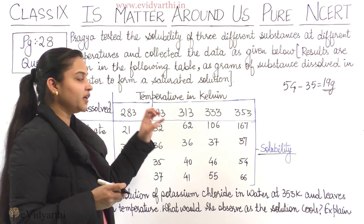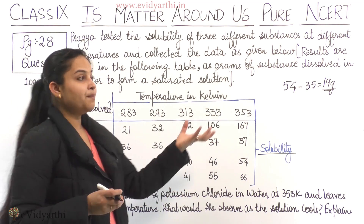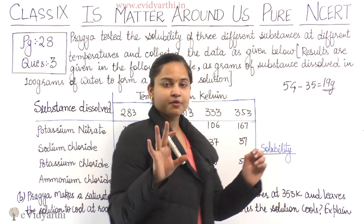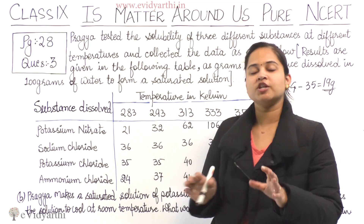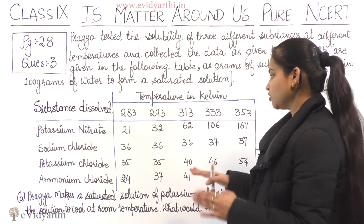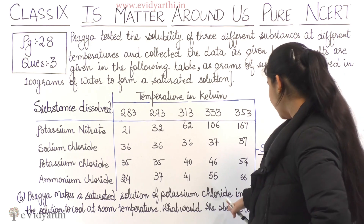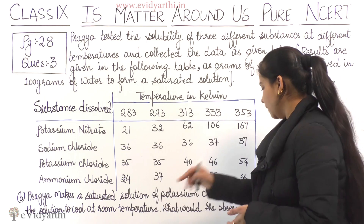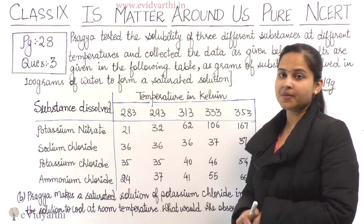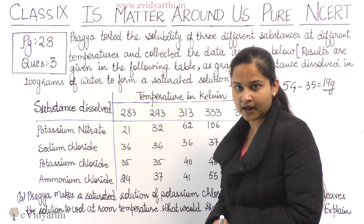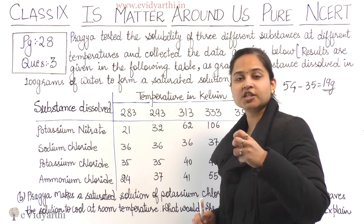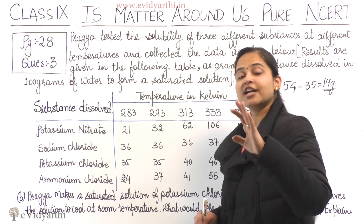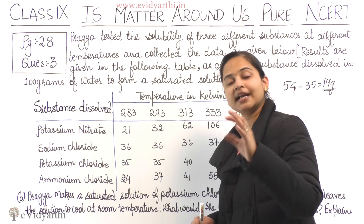As the solution cools to room temperature, some potassium chloride will precipitate out of the solution. When the saturated solution of potassium chloride in water at 353 Kelvin cools down to room temperature, some of the potassium chloride will precipitate out of the solution.